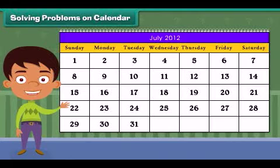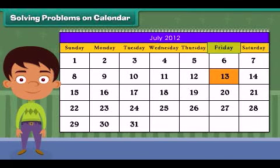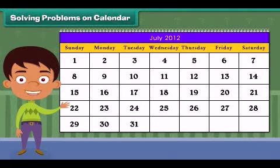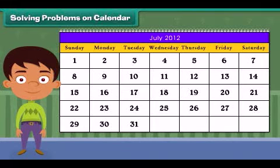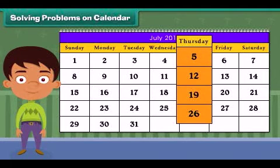Can you tell on which day this month ends? Yes, it's Tuesday. What day is it on 13th July? It is Friday. What is the date of the second Saturday? It is 14th July. Is the 21st a Sunday? No, it is not a Sunday — it is a Saturday. How many Thursdays are there in this month? There are four Thursdays in this month.